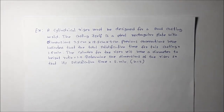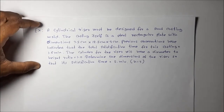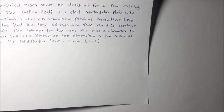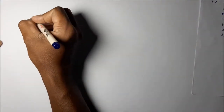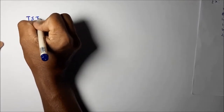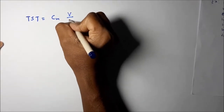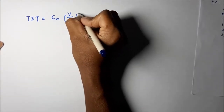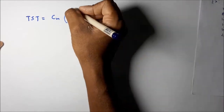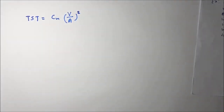The exponent constant n is equal to 2. We are going to use Chvorinov's rule to find and design this riser. Chvorinov's rule says the total solidification time for a casting is equal to the mold constant Cm multiplied by (V divided by A) raised to the exponent n. In this case, the exponent value is given as 2.